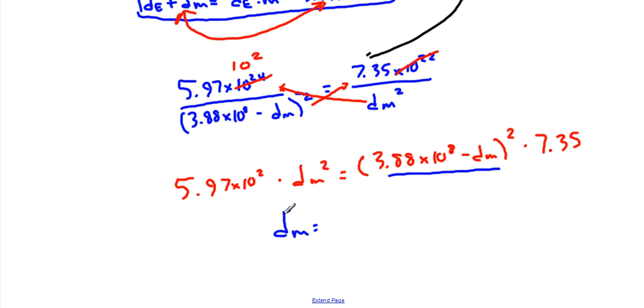When you do that, you will end up getting that the distance between me and the Moon is 3.87 times 10 to the seventh meters. Now that we know that, we can also figure out that the distance then to the Earth from where I am is 3.49 times 10 to the eighth meters.